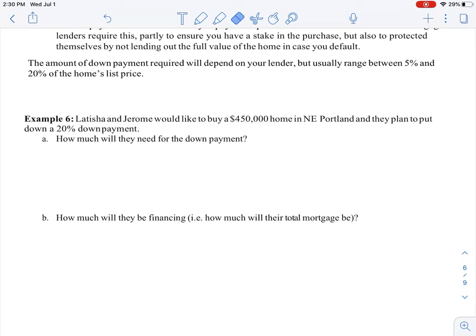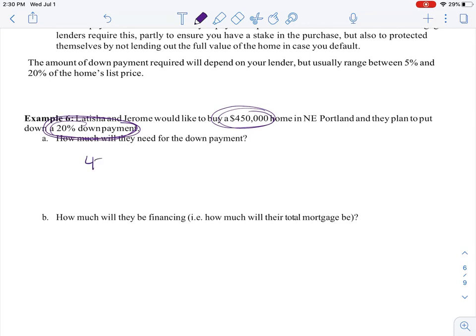So once again, we're drilling home this percentage idea. So if they need to put 20 percent down for a $450,000 home, it's going to be what the home's listing price is times the 20 percent. And when I do that in a calculator, you get $90,000.